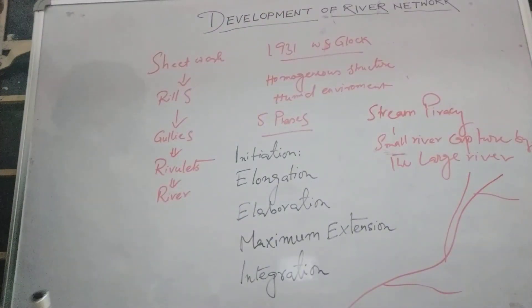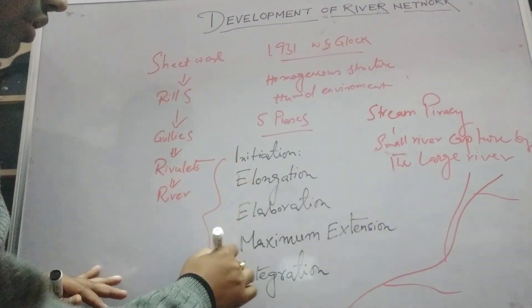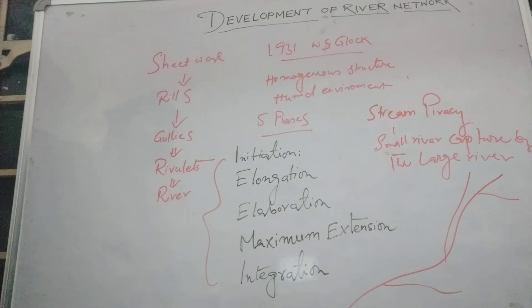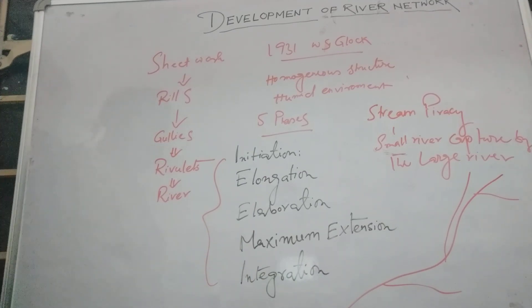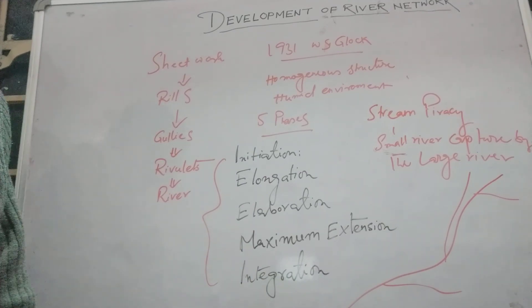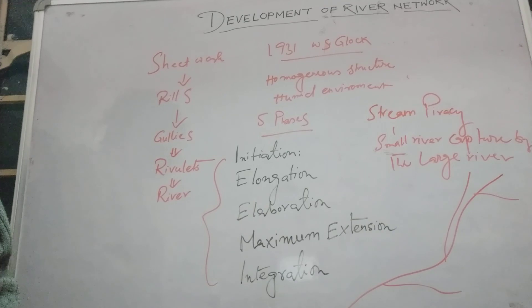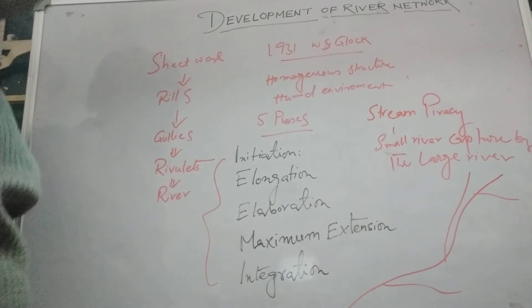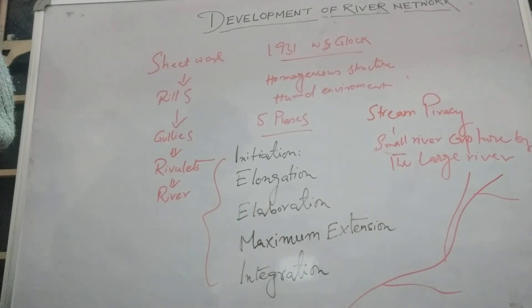This is the final stage. So these are the five stages introduced by W.S. Davis — the development of the drainage network and the evolution of the drainage system. Thank you for watching this video.